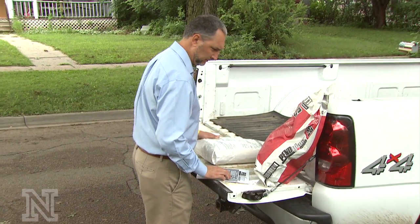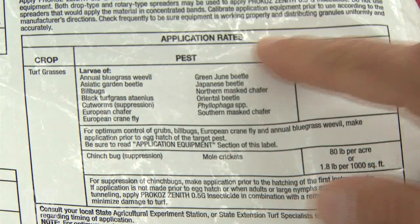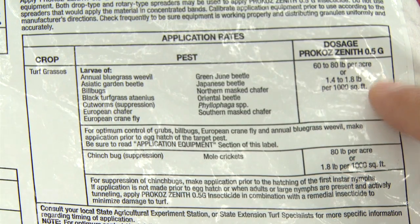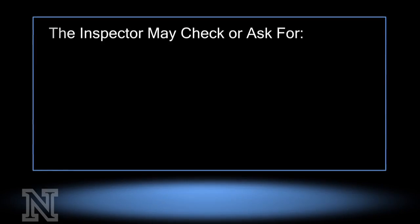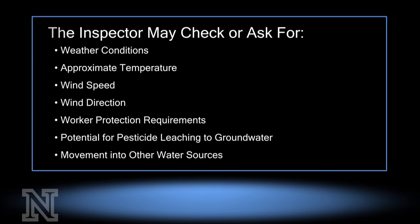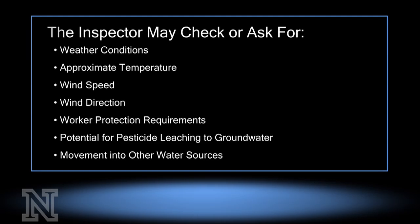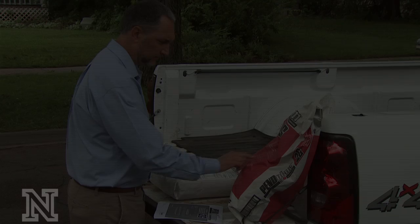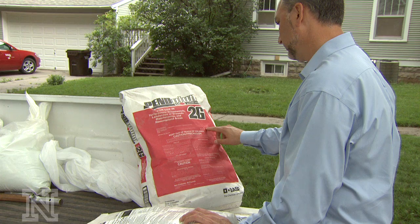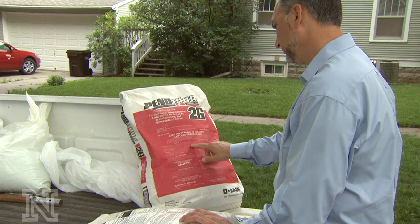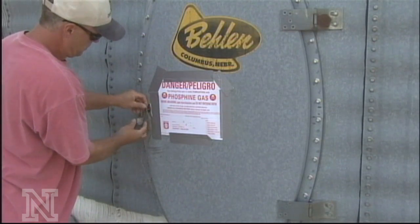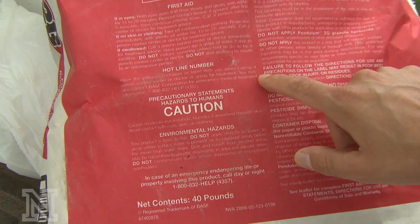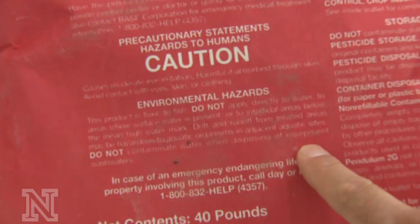The inspector needs to review the pesticide label. Applying a pesticide to a non-labeled crop or site is a serious violation. The inspector will check the application rate — it's illegal to exceed the pesticide label rates. Other information the inspector may check includes the weather conditions, approximate temperature, wind speed, wind direction, worker protection requirements, and the potential for pesticide leaching to groundwater or movement into other water sources. The inspector will also determine if the label requires the treated area to be posted as part of the Worker Protection Standard, or WPS. If the label says you must do something, you are in violation if you don't do it; likewise, if the label says not to do something, it's a violation if you do it.